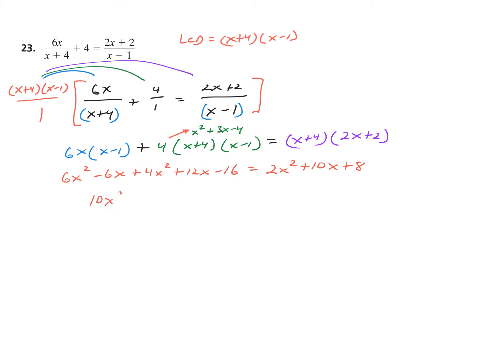We're not deciding which side to move to until we combine like terms. I have 10X squared — those two combined — plus 6X, which are those two combined, and minus 16 is by itself. Now with 10X squared on the left and 2X squared on the right, everything goes from right to left. Subtracting 2X squared gives 8X squared. Subtracting 10X gives minus 4X. Subtracting 8 gives minus 12 equals 0.